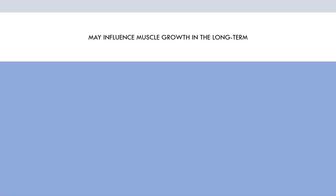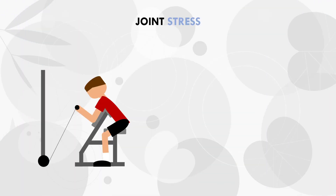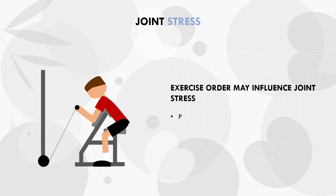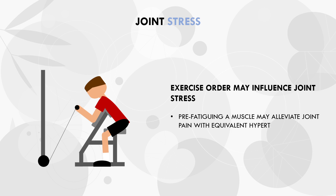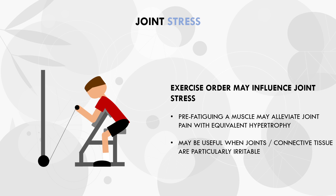Another indirect influence of exercise order is its effects on joint stress. Exercise order can influence volume load, and if trainees can achieve similar hypertrophy outcomes with less volume load, this may alleviate joint stress. If trainees can lift with lighter loads or fewer repetitions, it is likely to reduce the risk of joint pain or irritation. This may be favourable for those with particularly irritable joints or connective tissue due to current or past injury. In this case, trainees may want to pre-fatigue a muscle using an isolation lift prior to a compound lift in order to limit volume load and therefore limit joint stress, while still achieving equivalent hypertrophy outcomes — at least in the short term.